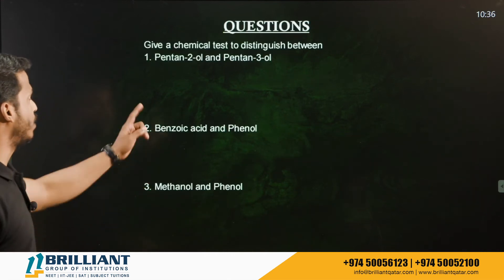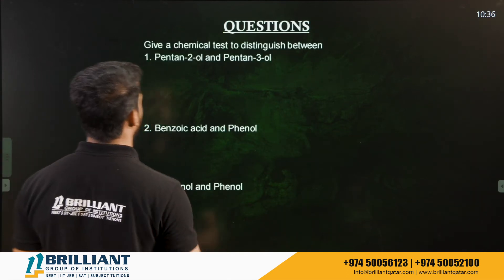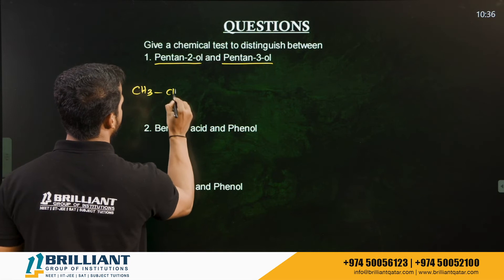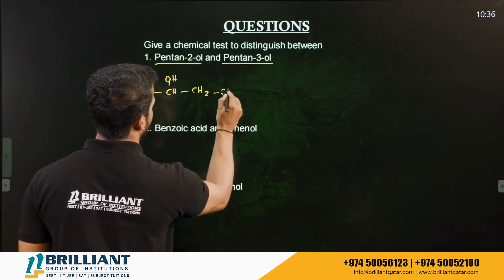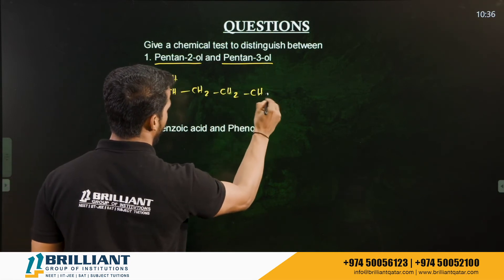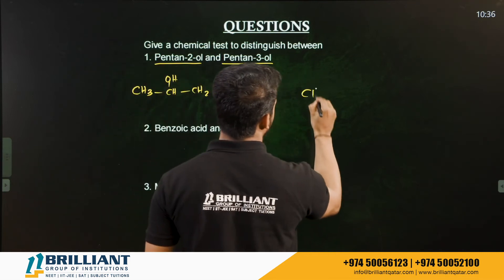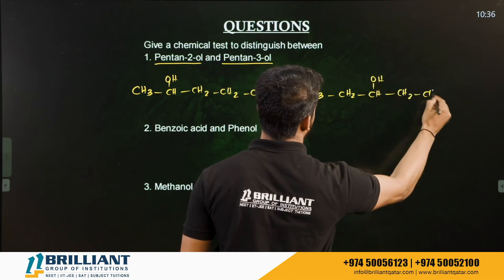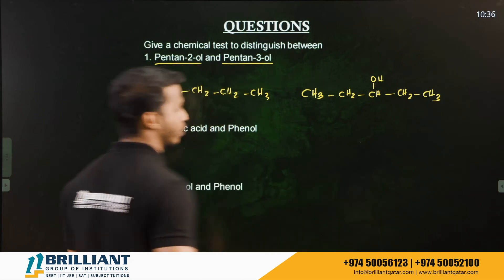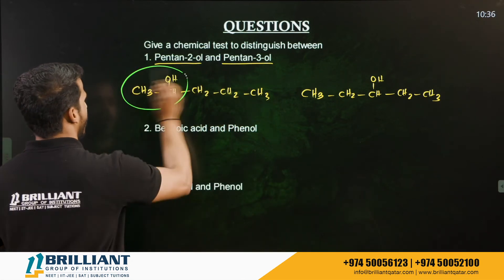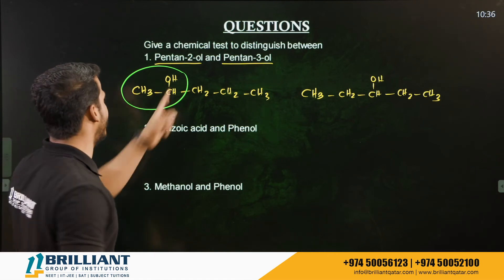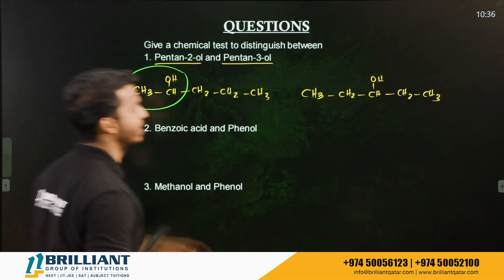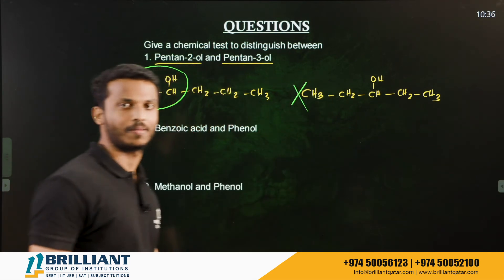Question: Give a chemical test to distinguish between pentan-2-ol (CH₃CHOH–CH₂CH₂CH₃) and pentan-3-ol (CH₃CH₂CHOH–CH₂CH₃). You can see the CH₃CHOH group is present in pentan-2-ol, so it can give the iodoform test. Pentan-3-ol does not have that group, so it cannot give iodoform test.